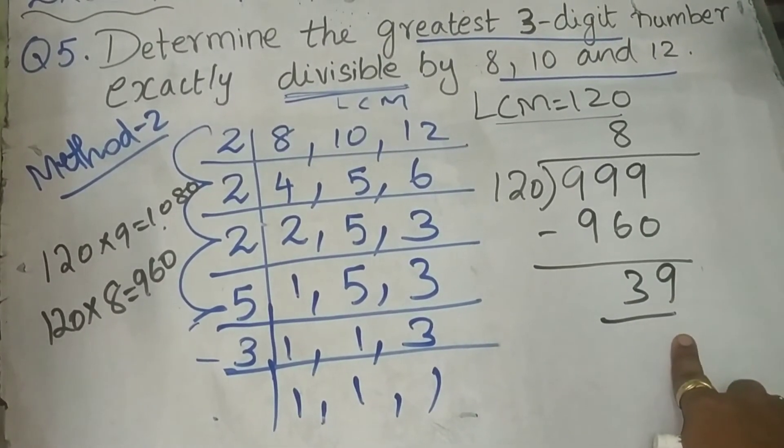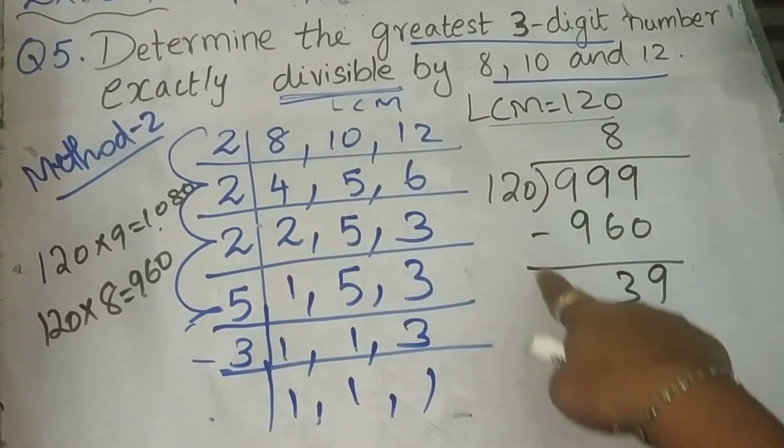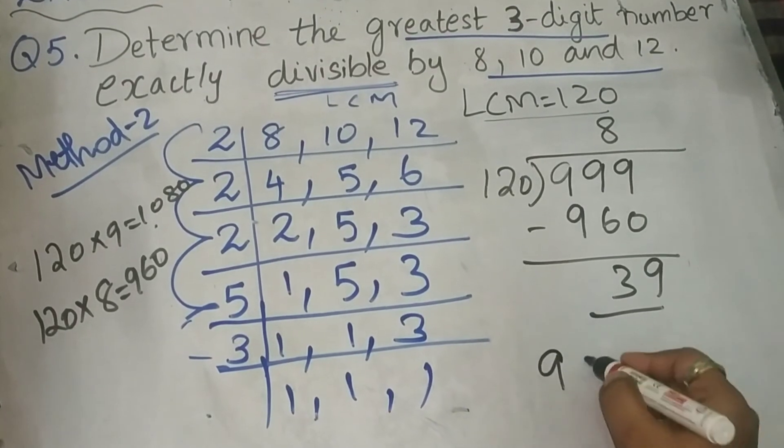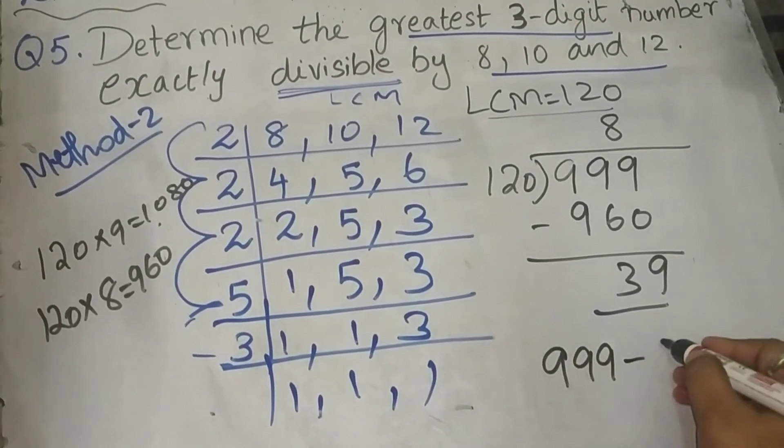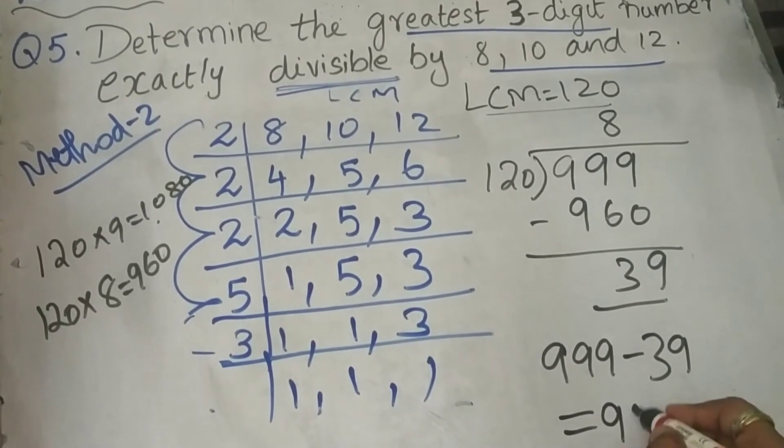I am getting the remainder. So, here we are concluding that this is not divisible. Next step, what we have to do? Take your dividend, 999, should be subtracted with the remainder. What you are getting? 960.